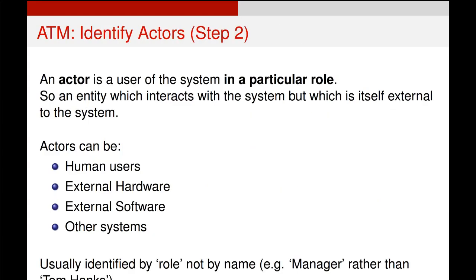Once we've done that, we need to identify the actors in our system. Actors can be a variety of different things: external hardware like a robotic arm, external software like a money authentication system, or genuine human users. They're identified and described in terms of their role rather than by their name. So rather than saying John, we would say a bank customer. Rather than saying the IP address 192.168.56.17, we would say the Visa authentication system instead.